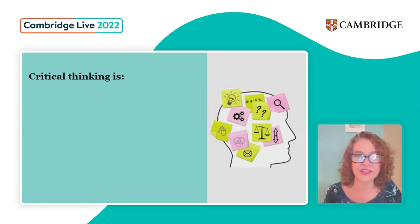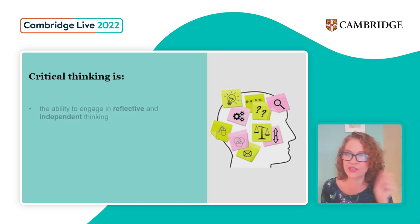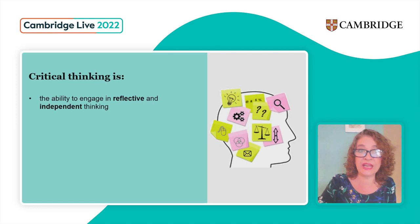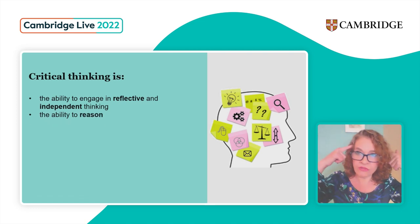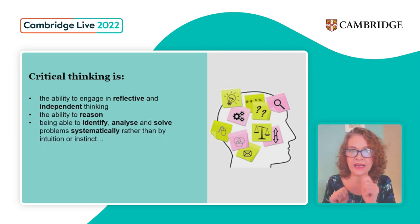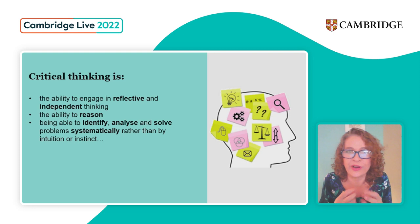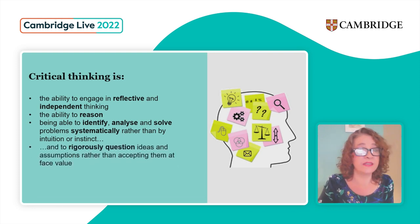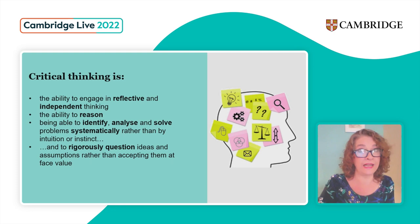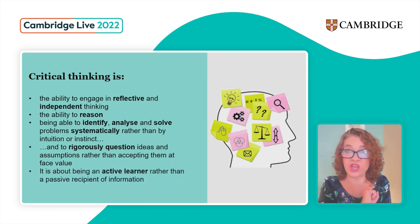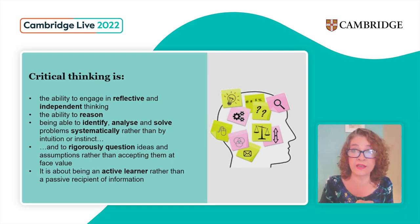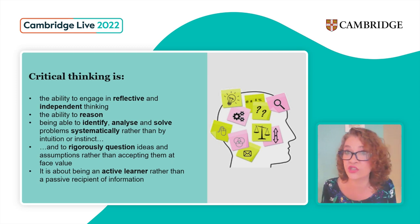We're going to look at critical thinking first of all. What does it mean to you? The ability to engage in reflective and independent thinking — reasoning skills, identifying, analyzing — we're thinking of Bloom's Taxonomy now. Solving problems systematically rather than by intuition or instinct, and very importantly: rigorously questioning ideas and assumptions, not just accepting them at face value. We've heard the term 'active learner' a lot — when we develop critical thinking skills we are creating active learners because they're very involved with their own learning, they're questioning things.